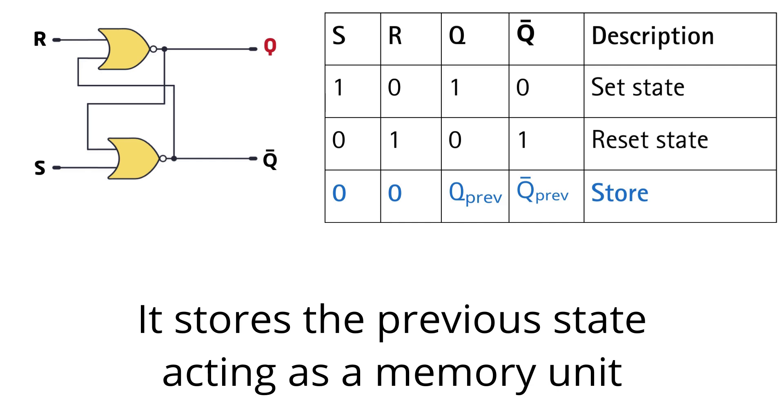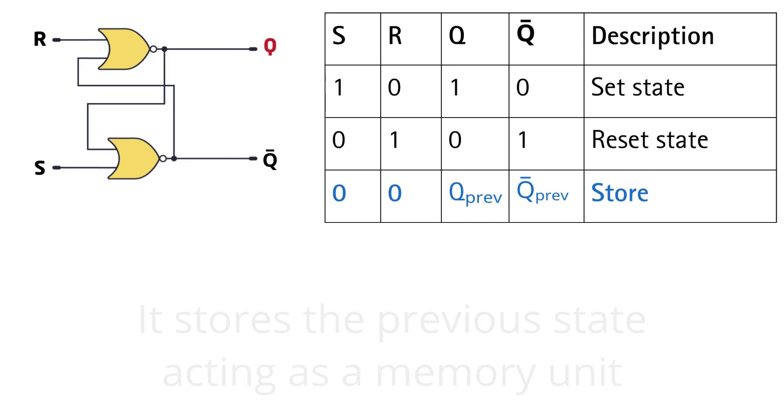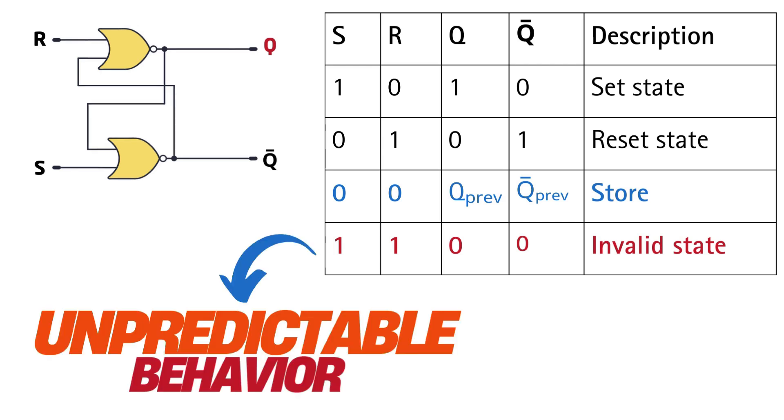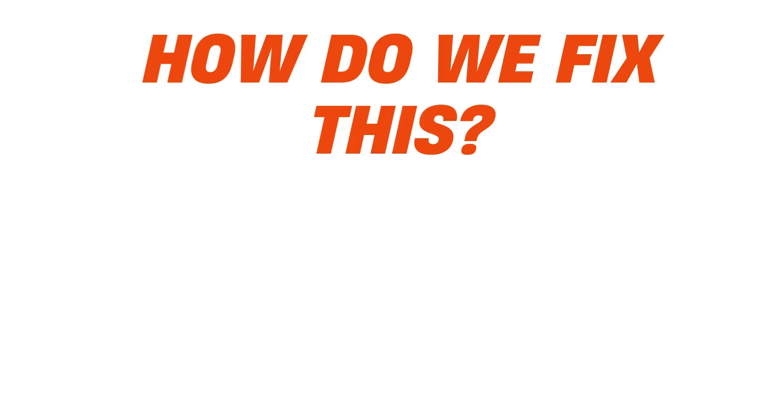But wait, we've also introduced a new problem. When both S and R are 1, the outputs Q and Q bar are both 0. That shouldn't happen. Q and Q bar are supposed to be opposites. This is a serious problem because if our SR latch enters this state, it becomes unstable and can't reliably store data. So how do we fix this?